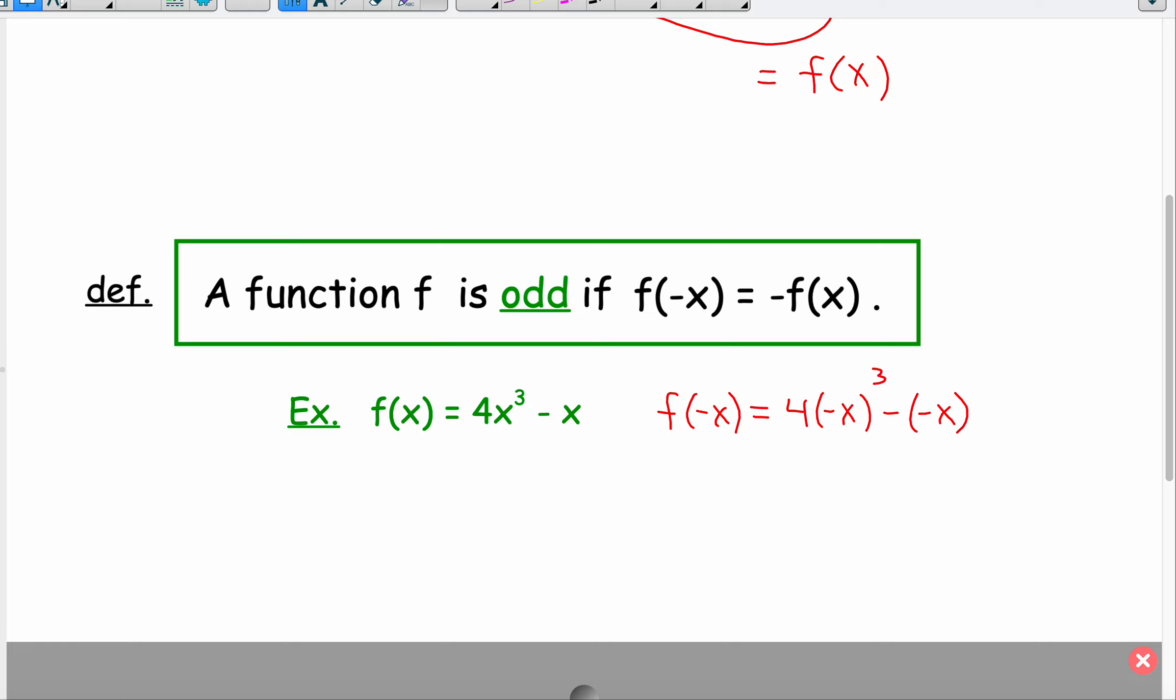What's negative x to the third power? Well, that's negative x times negative x times negative x. A negative times a negative times a negative is a negative, and then we have x to the third power. So this is going to give me negative 4x to the third power.